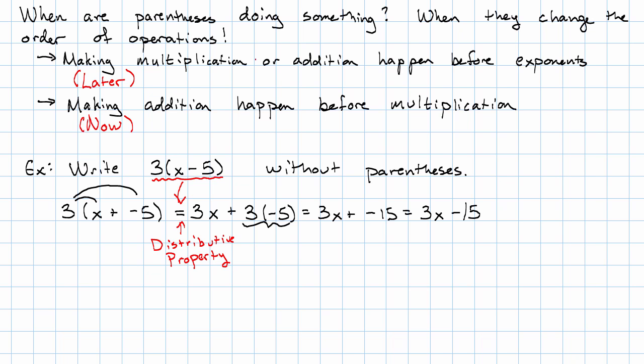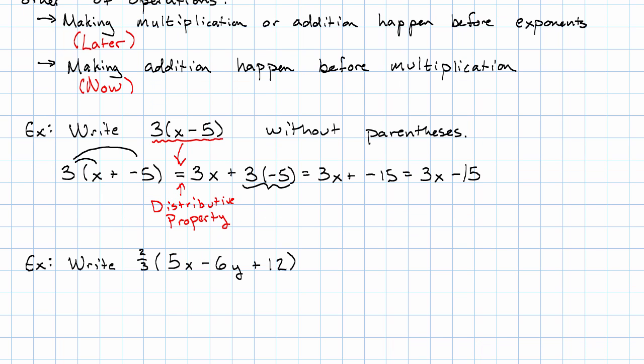Let's see a slightly more complicated example. Let's say we wanted to write this expression, 2 thirds times 5x minus 6y plus 12, without parentheses. Well, again, we just distribute, and we understand minus as plus the negative.